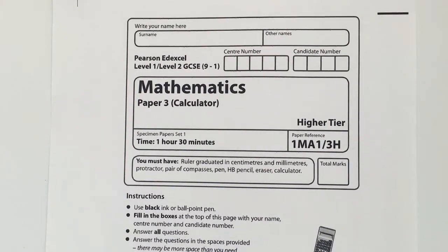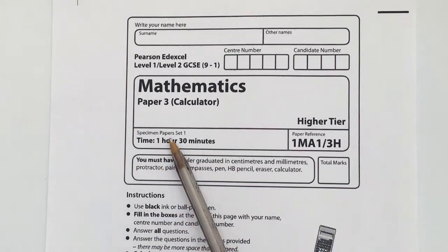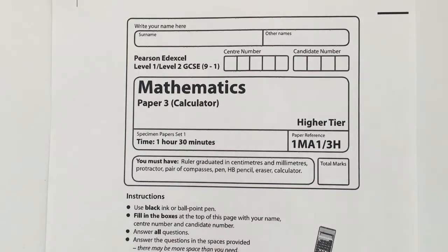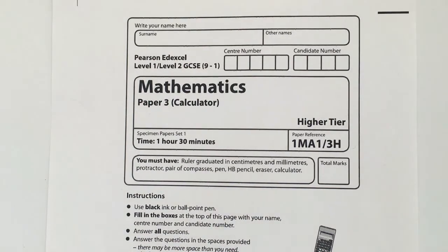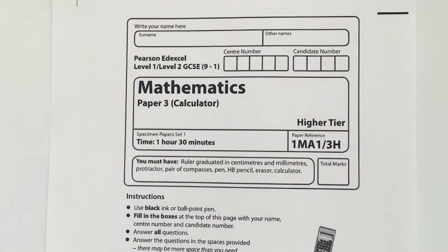Hi, so this is the final video in the series where we've been looking at the specimen paper 1 and it's paper 3 for the Edexcel mathematics higher tier. As before, please do stop the video, have a go at each of the questions and then compare your answers. Now this particular video is going to deal with the final few questions in this particular paper, so we're going to start with question number 20.